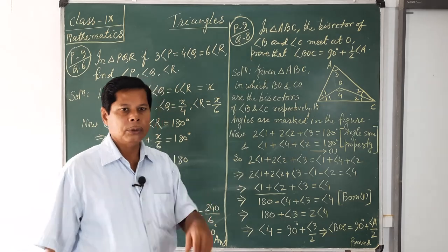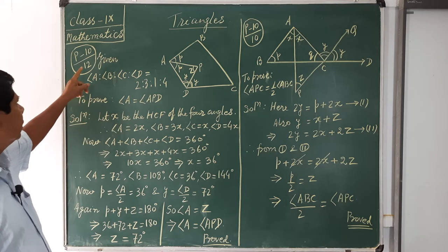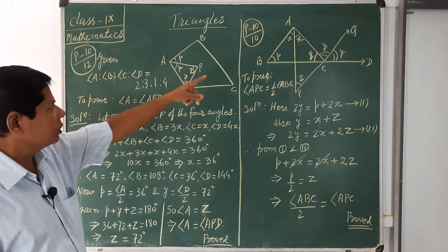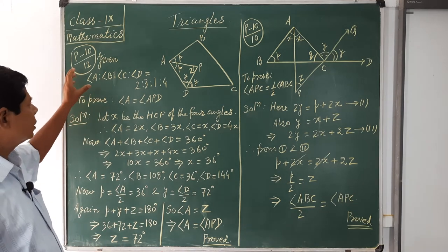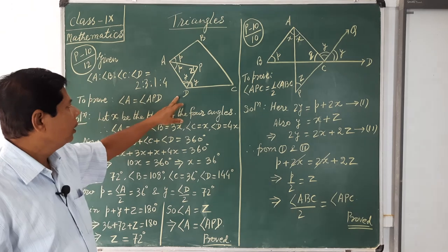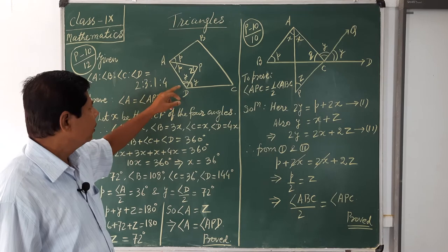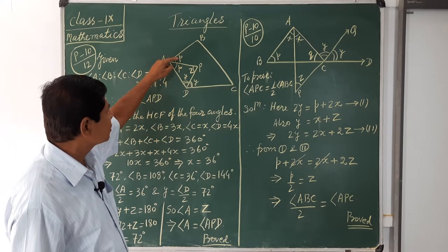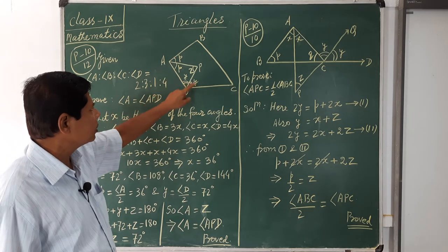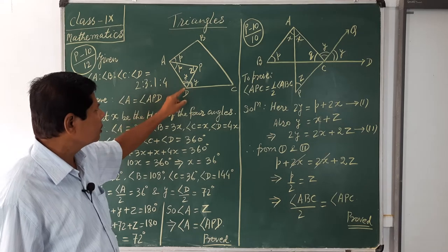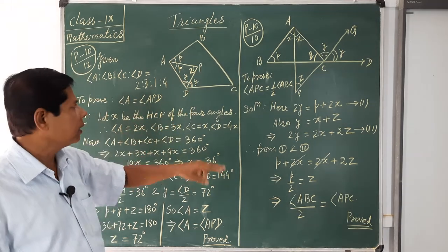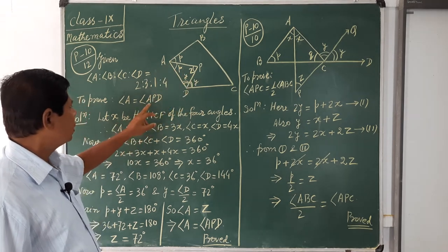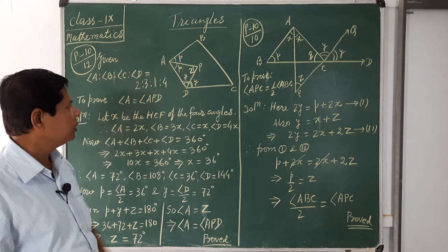Next, we shall solve two more problems — problem number 10 and 12 from page 10. For question 10: ABCD is a quadrilateral in which AP is the bisector of angle A and DP is the bisector of angle D, and they meet at point P. So angle A is divided into two equal parts (each labeled small p), and angle D is divided into two equal parts (each labeled small y). The angle APD is labeled small z.